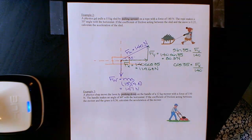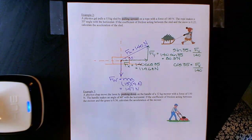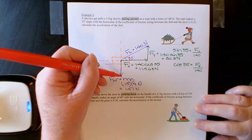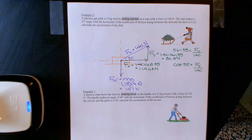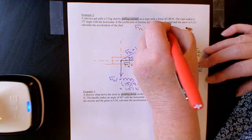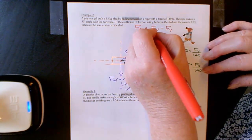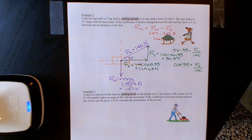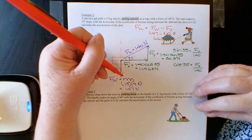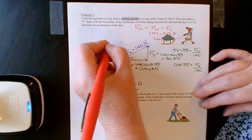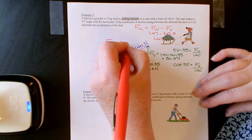Now let's talk about the normal force — the force that a surface presses back up. Look at what's pressing onto the surface: you have 147 newtons pressing down, but you have 80.3 newtons pulling upward because you're pulling the rope at an angle. So the normal force equals the force pressing down minus the force going up: 147 minus 80.3 equals 66.7 newtons. Only 66.7 newtons is pushing into the ground, so the ground pushes back with Fn of 66.7 newtons.